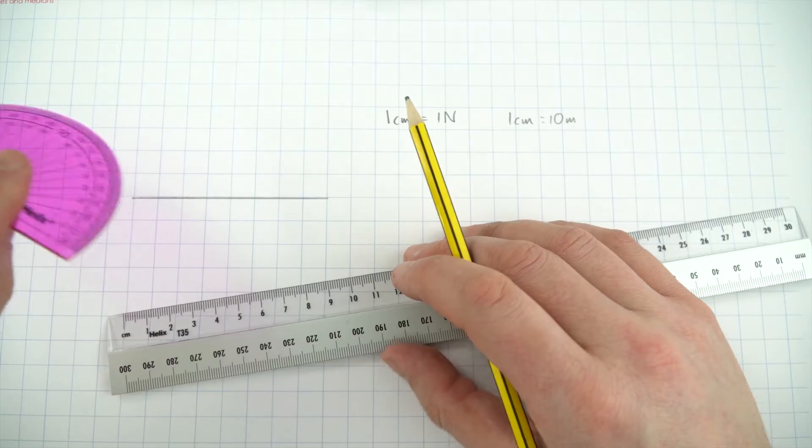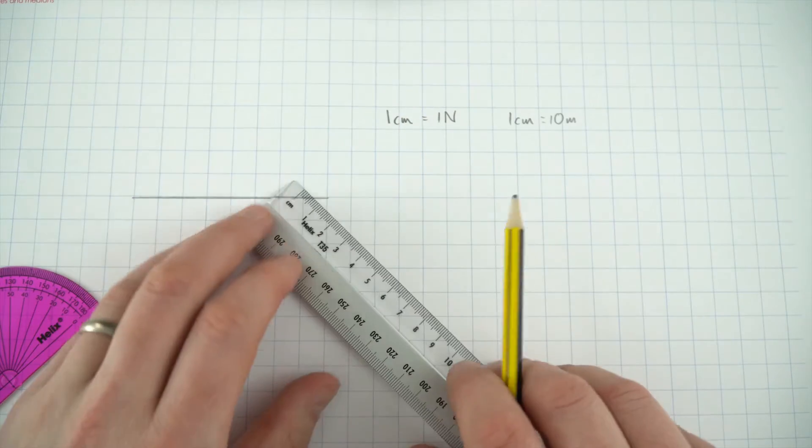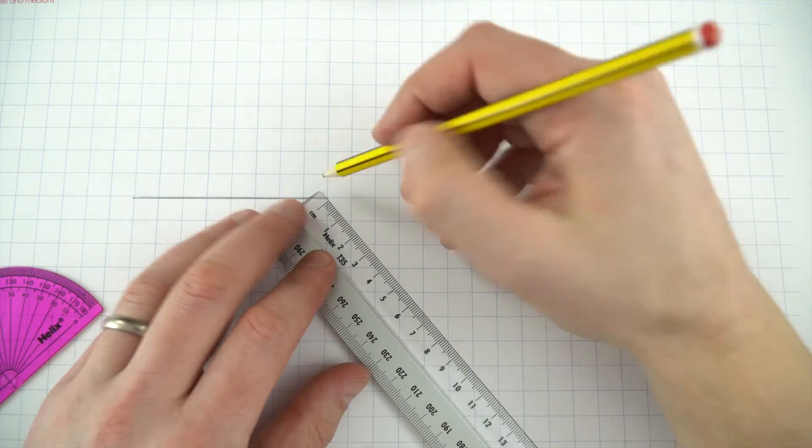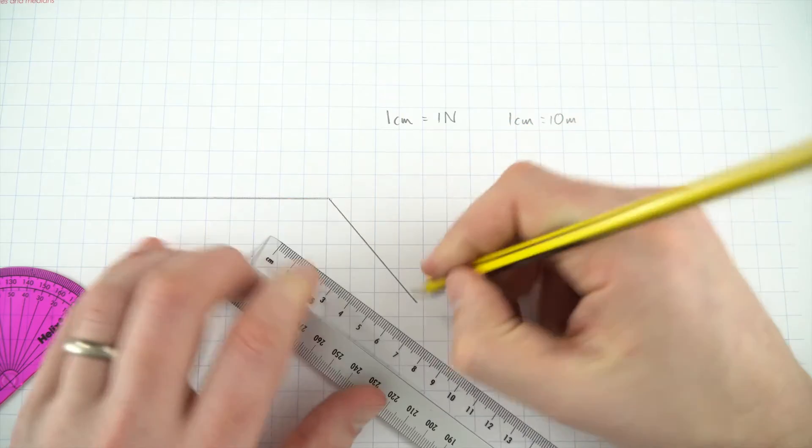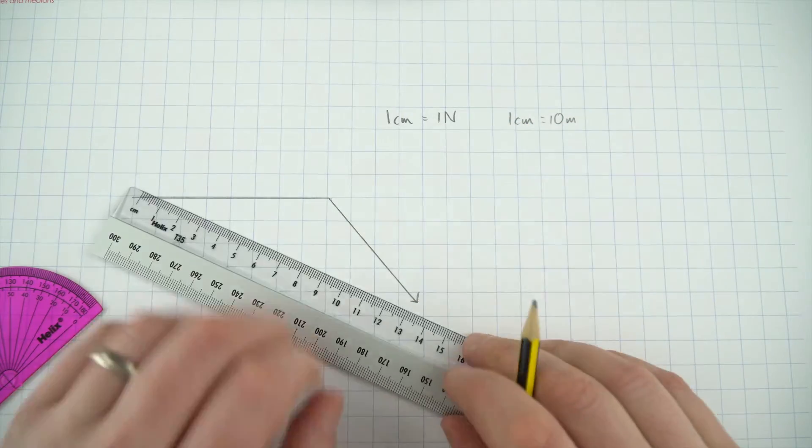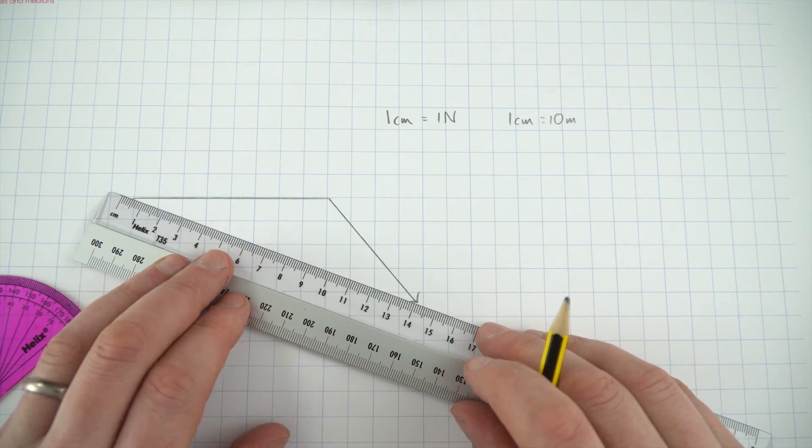Again you can use your protractor if you're looking at maybe adding vectors together. So you'd measure the angle, you'd draw it an appropriate distance, and maybe this allows you then to work out the resultant force on an object.